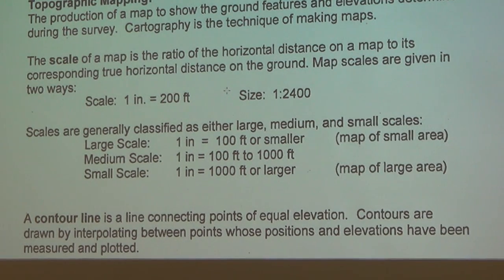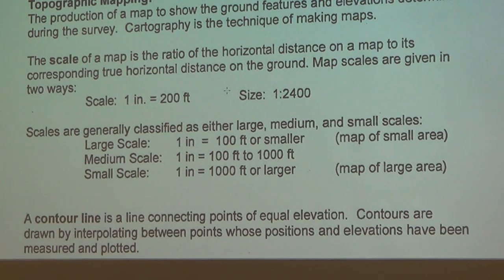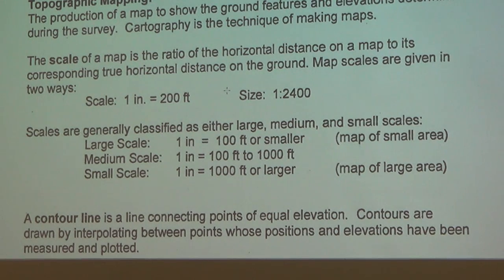When you open a AAA map and it says one inch equals five miles, and you measure the distance from Santa Cruz to San Jose and it's two inches, you might say it's only ten miles. But what is that scale really representing — horizontal, vertical, or slope distance? It's representing a horizontal distance.